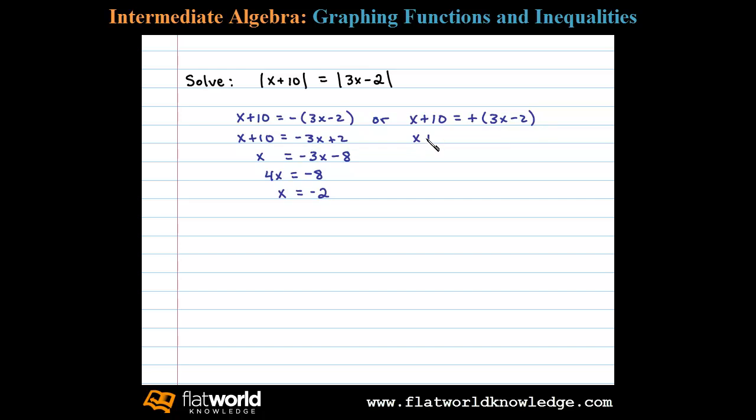Multiplying both of these terms by positive 1, we have 3x minus 2. Subtracting 10 on both sides, x equals 3x minus 12. Subtracting 3x, we're left with negative 2x equals negative 12.